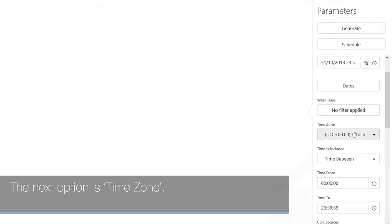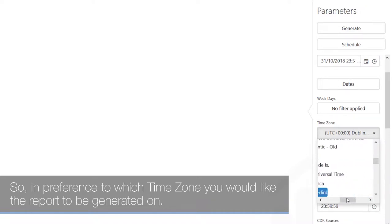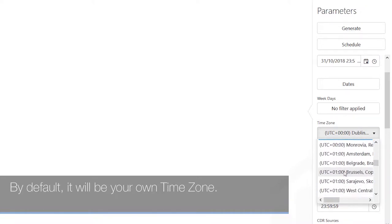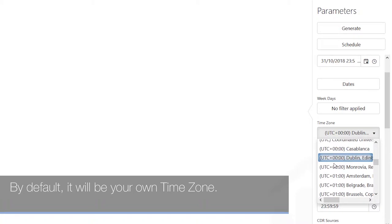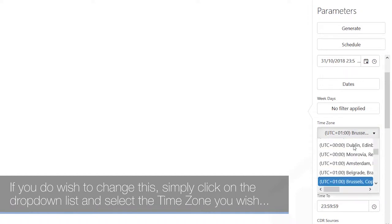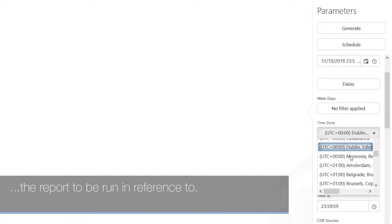The next option is time zone, which sets the preferred time zone for the report to be generated in. By default it will be your own time zone. If you wish to change this, simply click on the drop-down list and select the time zone you wish your report to run in reference to.